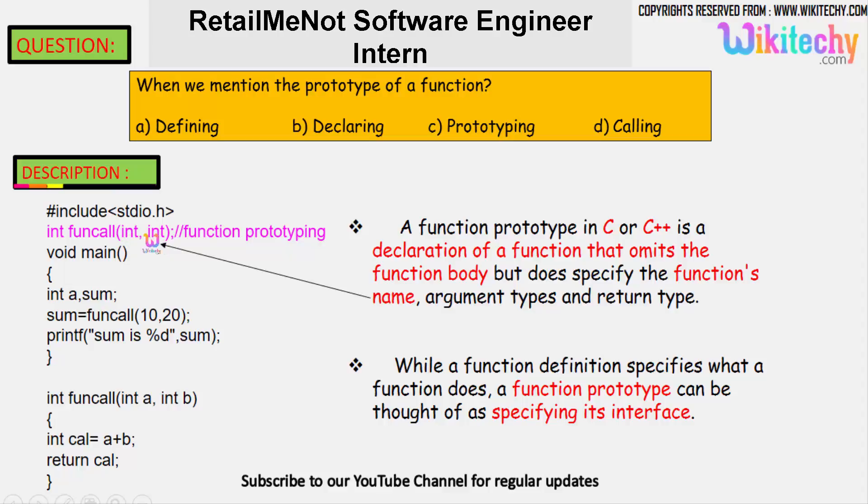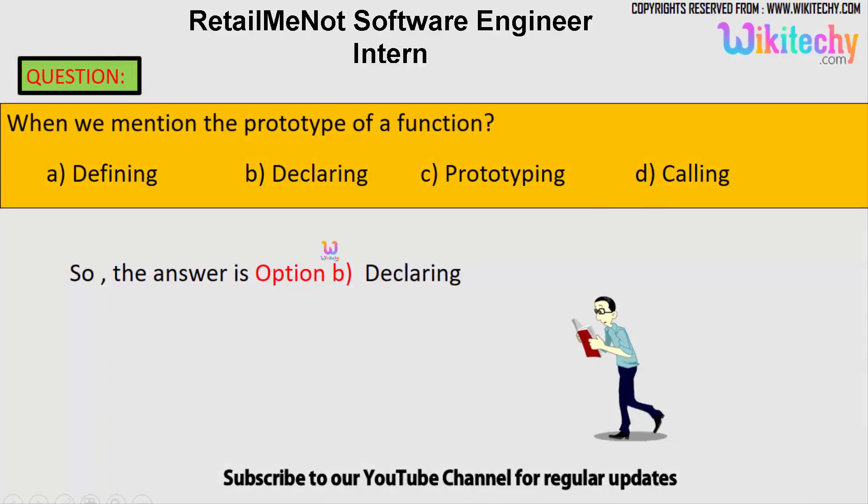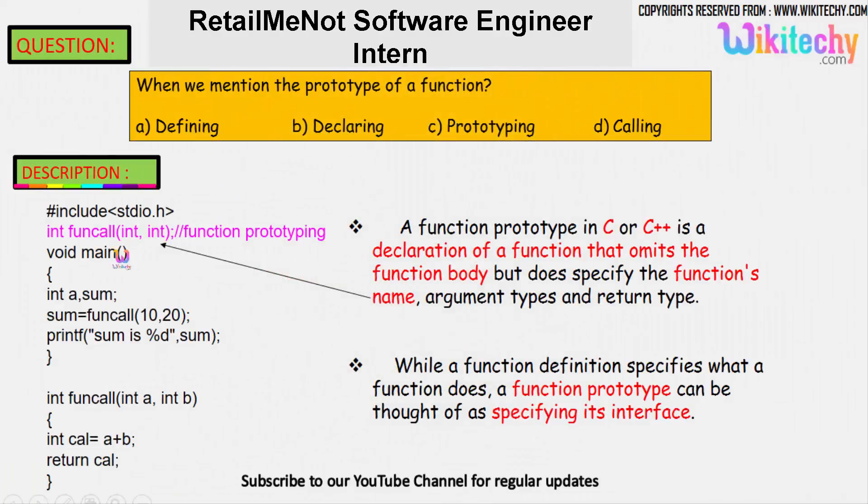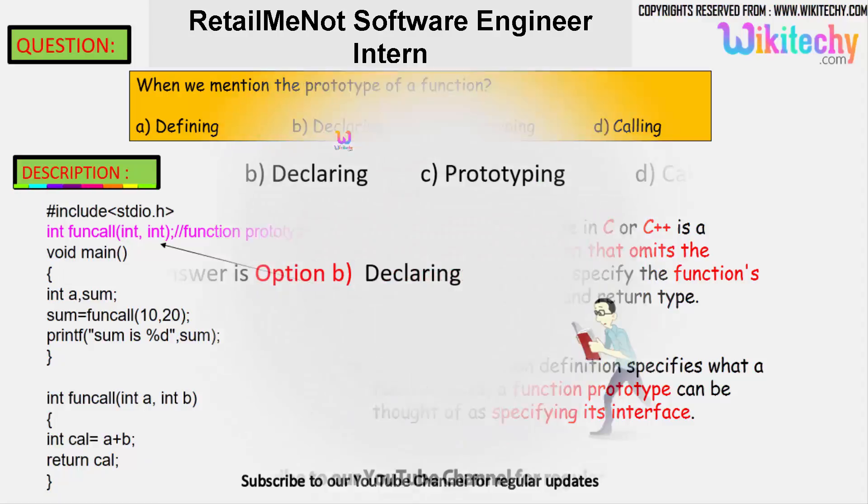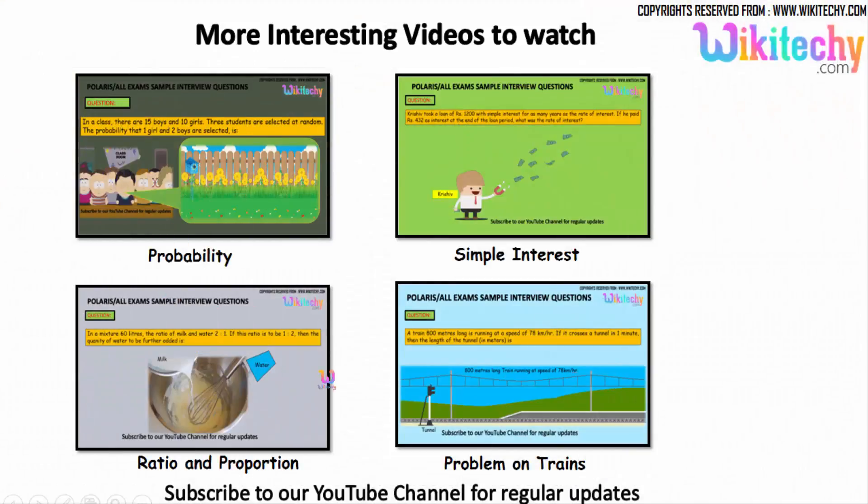So the option is declaring. Defining - it's not defining because this is the definition. Prototyping - function prototyping is also called declaring in C and C++. Calling - we are not calling it. So the exact answer is declaring, the option is B.